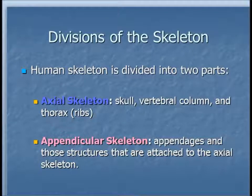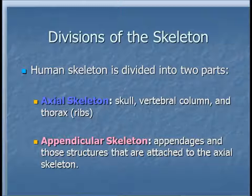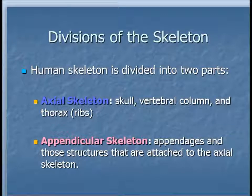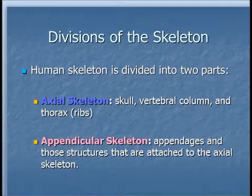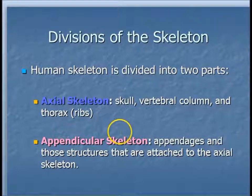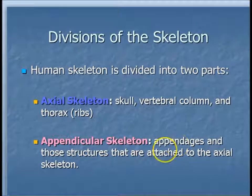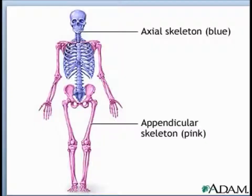The skeletal human skeleton is actually divided into two parts. There's the axial skeleton, which is kind of like the base of the body. This is going to include your skull, your vertebral column, and your rib cage, your thorax. This is the base where all the other parts, or the appendicular skeleton, will actually attach to or branch off of. The appendicular skeleton then are your appendages — your arms, legs, and those structures basically attached to the axial skeleton. On this diagram, you have the axial skeleton in blue, and then everything in pink is the appendicular skeleton.